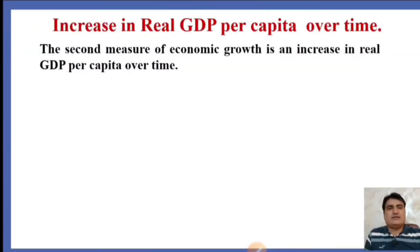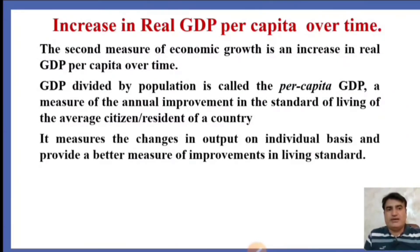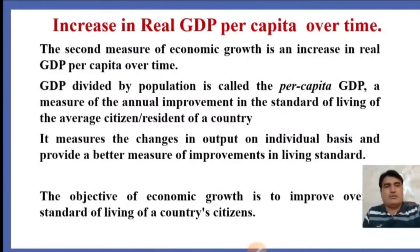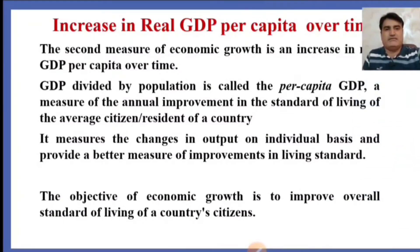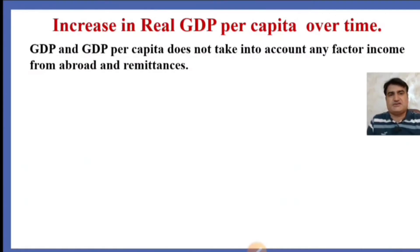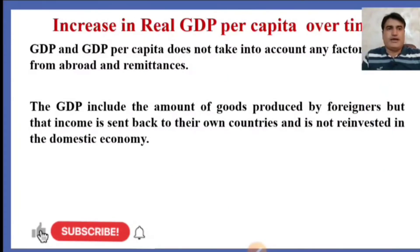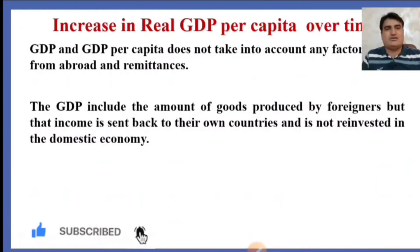The second measure of economic growth is an increase in real GDP per capita over time. GDP divided by population is called per capita GDP. GDP per capita measures the annual improvement in the standard of living of citizens of a country. It measures the changes in output on an individual basis and provides a better measurement of improvement in living standards. The objective of economic growth is to improve the overall standard of living of a country's citizens. However, GDP and GDP per capita do not take into account any factor income from abroad and remittances.